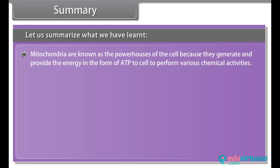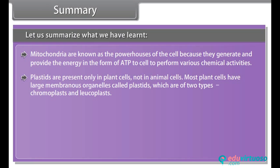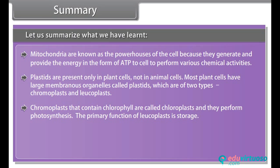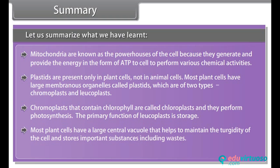Mitochondria are known as the powerhouses of the cell because they generate and provide energy in the form of ATP to perform various chemical activities. Plastids are present only in plant cells, not in animal cells, and are of two types: chromoplasts and leukoplasts. Chromoplasts that contain chlorophyll are called chloroplasts and perform photosynthesis. The primary function of leukoplasts is storage. Most plant cells have a large central vacuole that helps maintain turgidity and stores important substances including wastes.